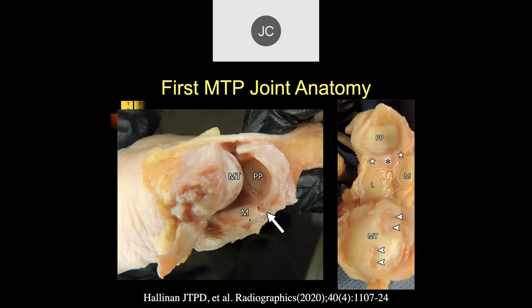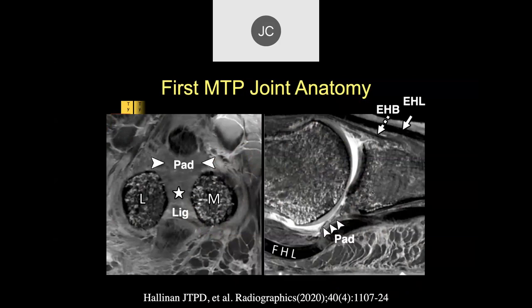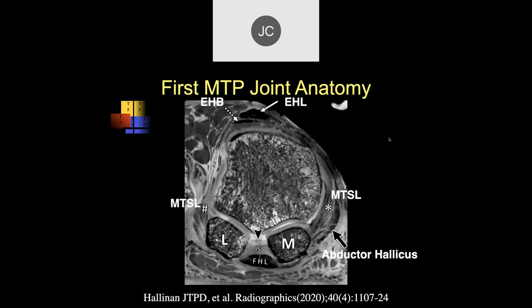The big toe is very important for balance and for pushing off, and provides power for running. Looking at a gross specimen, we can see the metatarsal head, the articular surface of the base of the phalanx, and the sesamoid bones. On high-resolution MR imaging, you can see the articular cartilage and bone. On coronal views, we see lateral and medial sesamoids with a defect in the articular cartilage — a common location for degenerative joint disease. The sesamoid ligament, flexor hallucis longus, and collateral ligaments are also visible, as is the abductor hallucis.